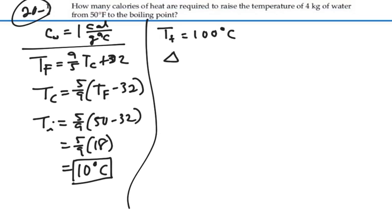So our change in temperature, which is our final temperature minus our initial temperature, will be 100 minus 10, or 90 degrees Celsius.